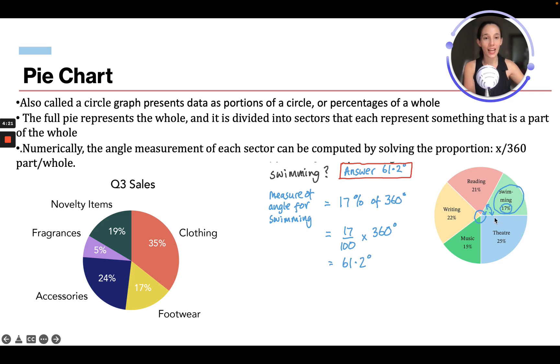You know how when they say 180, it's half, it's one line. 360 is the whole way around. So this is showing quarter three sales: novelty items, fragrances, accessories, footwear, clothing, and it's showing the correlating percentage of all sales.